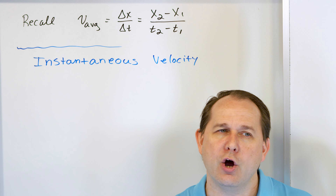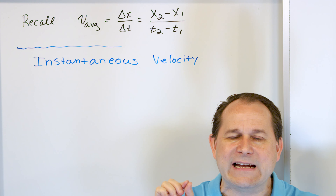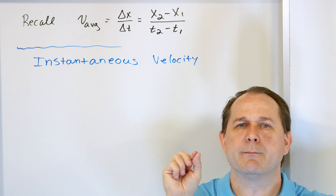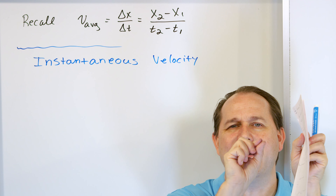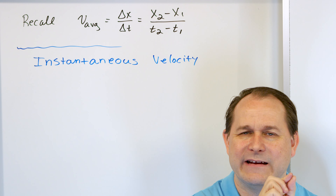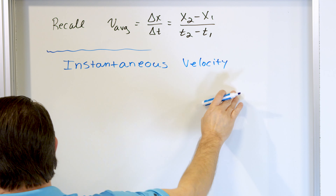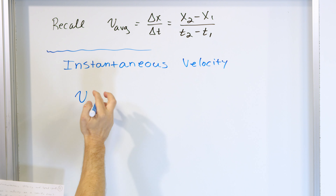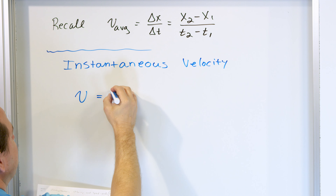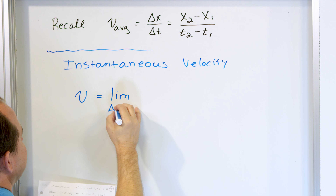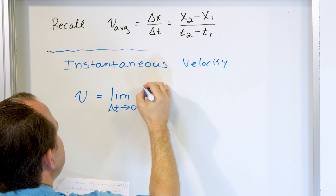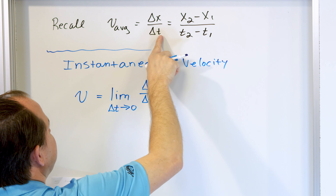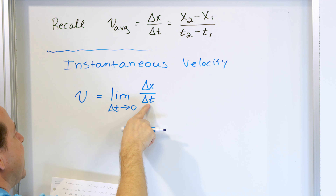We know the velocity is increasing. Instead of looking at two points far apart and finding the average velocity, we want to bring the two points closer and closer together so that we actually find the velocity at an instant — the instantaneous velocity. Mathematically, we write v — not average anymore — equal to the limit as delta t approaches zero of delta x divided by delta t. It's the same equation, delta x over delta t, but now we take the limit as delta t goes to zero.